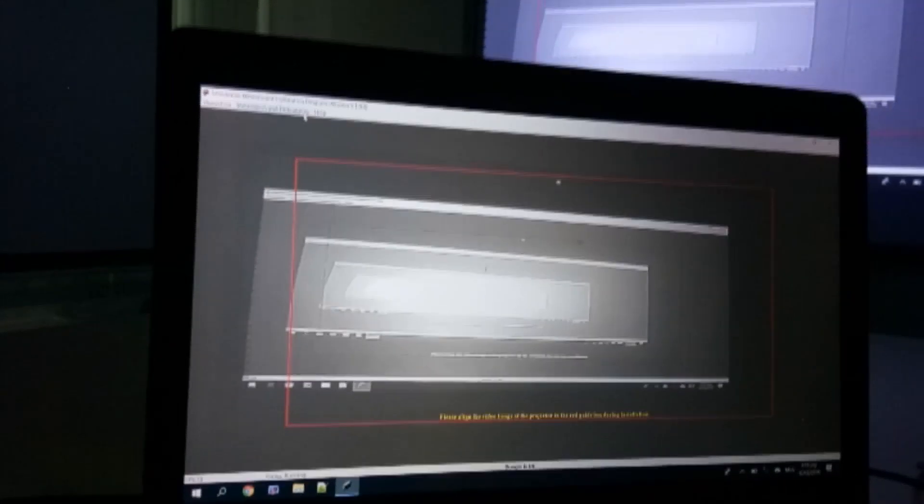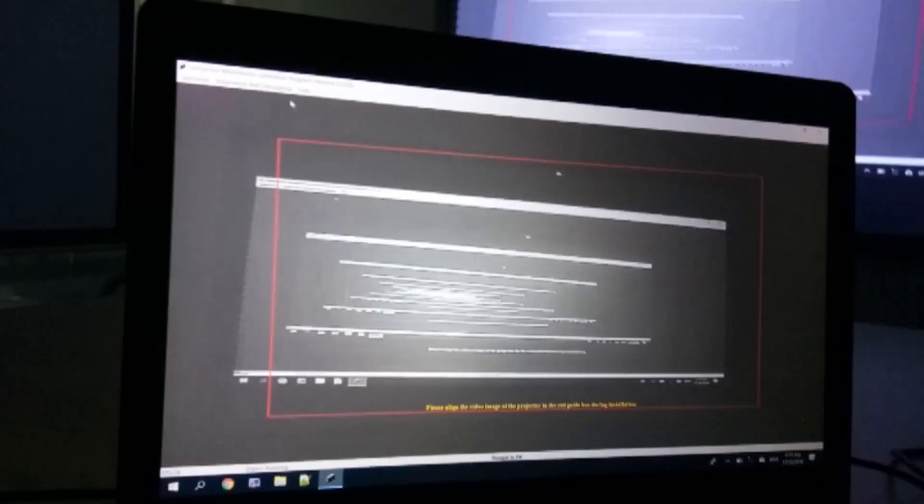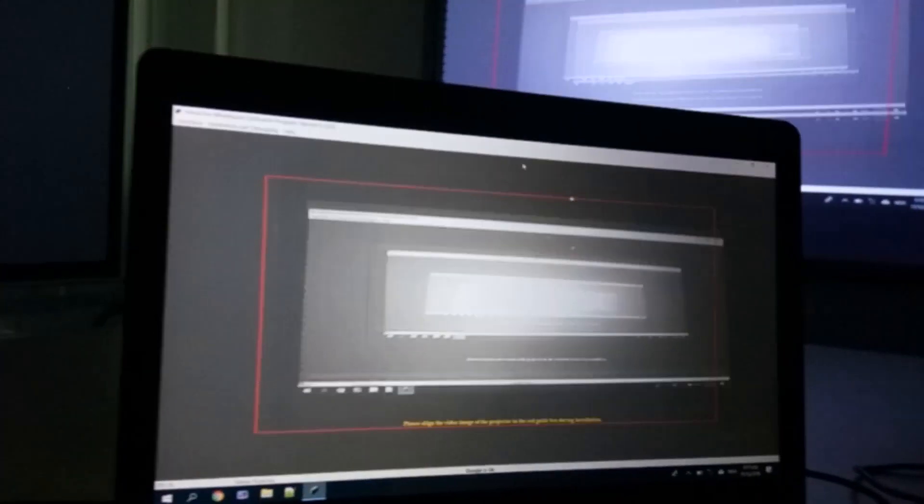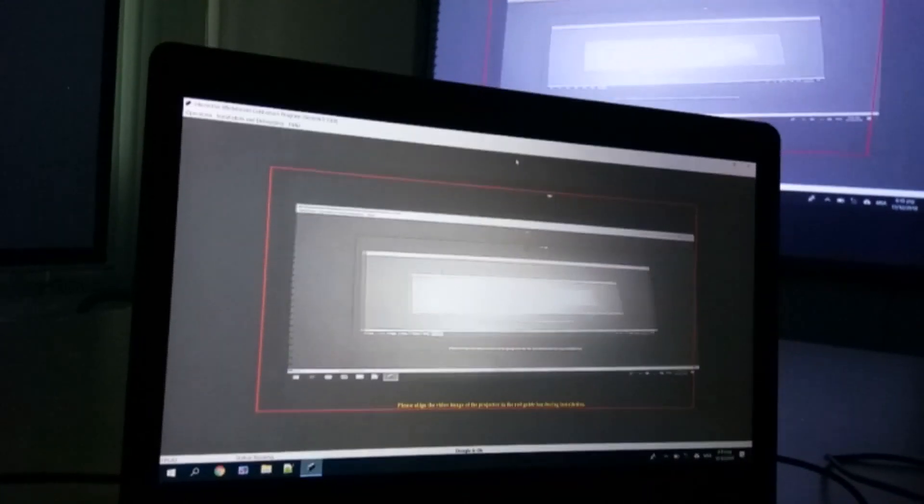Selepas masuk dekat sini, pergi ke installation dan debugging. Kita akan select tuning webcam image mode. Waktu ni perlu adjust sensor untuk masukkan image di dalam petak merah.